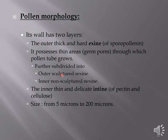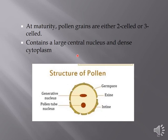The exine is further subdivided into two layers. The outer one is a sculptured layer known as sexine, and the inner one is non-sculptured, known as nexine. Inner to the exine is a thin and delicate layer known as intine, made up of pectin and cellulose. The size range for pollen grains is from 5 microns to 200 microns. At maturity, these pollen grains can be two-celled or three-celled, and they contain a large central nucleus with dense cytoplasm.